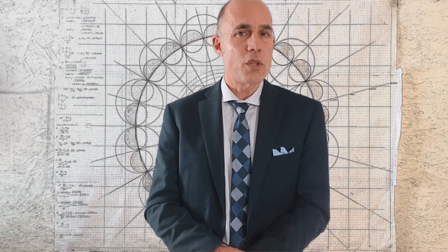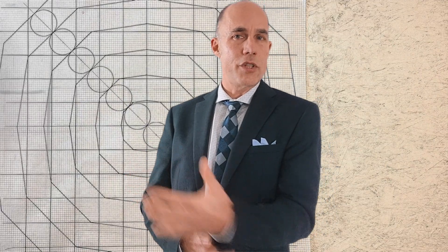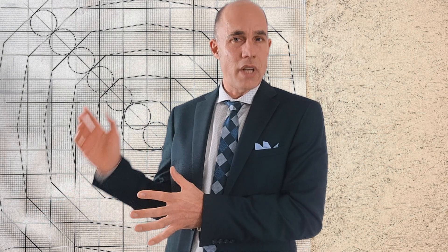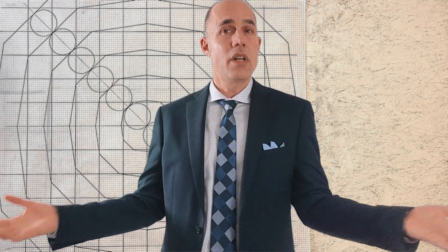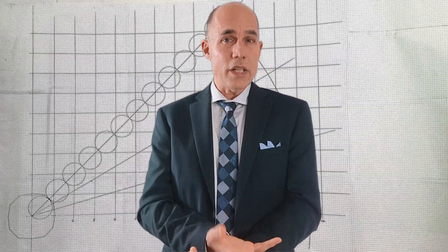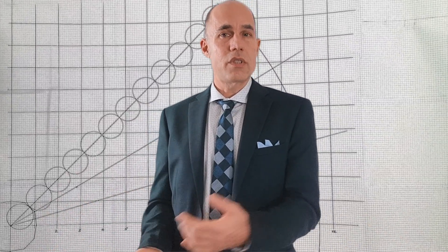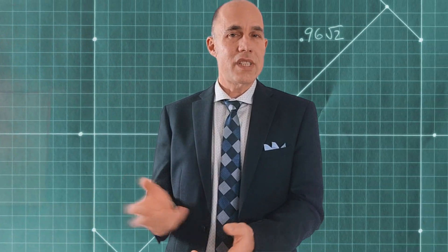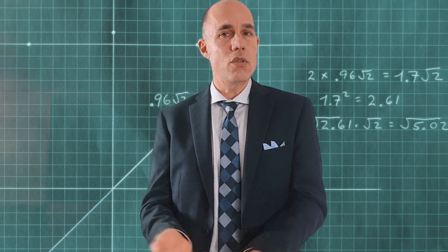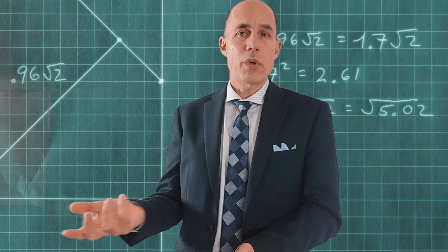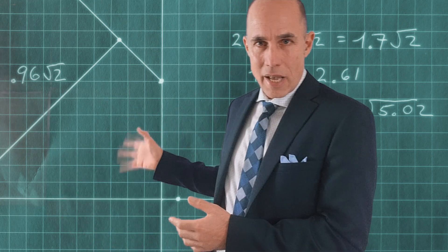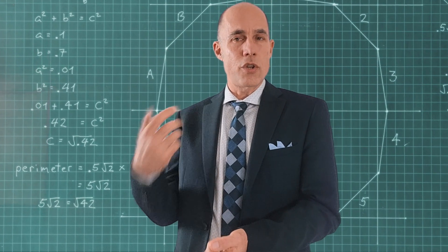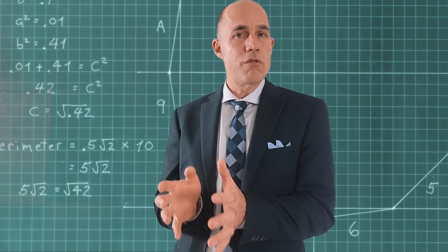We'll use the very first ring of the dodecagon. Any combination of diameter and circumference will generate the same result because pi is a ratio — circumference divided by diameter. In this example the diameter is 1.7 root 2 and the circumference is 5 root 2. We're working in units of the square root of 2, and we'll convert those numbers into their square root versions.